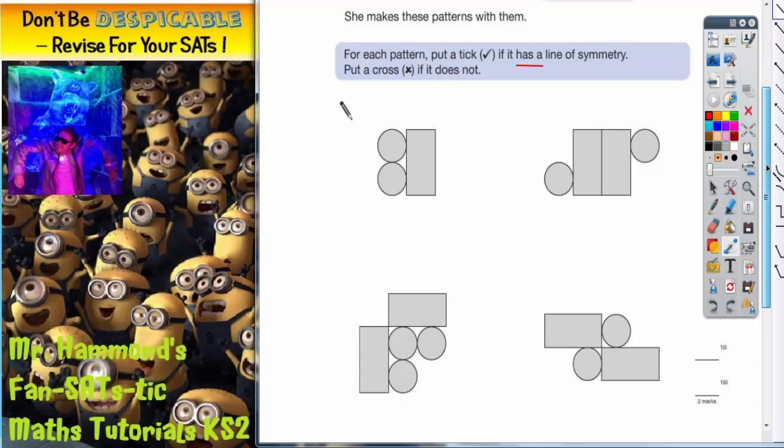So these are the patterns she is making. For each pattern put a tick if it has got a line of symmetry, put a cross if it does not.